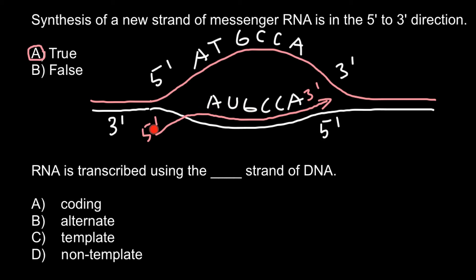But otherwise, as you see, the code would be the same and direction would be the same. From 5 to 3 prime end we would see the same sequence.